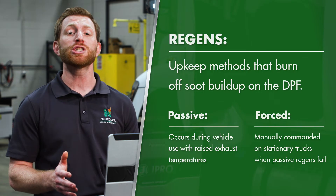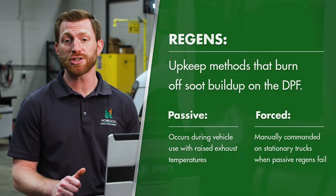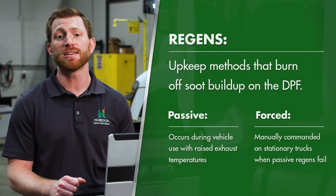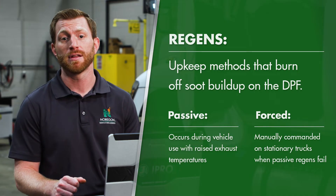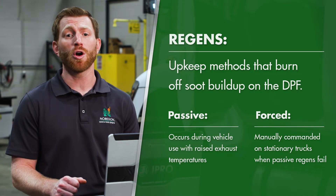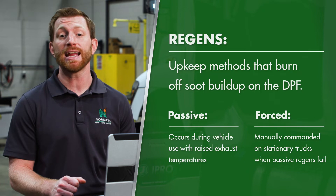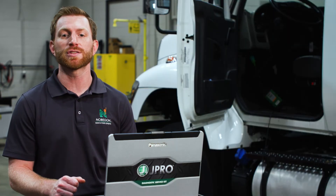A forced regen occurs on stationary trucks and is typically done when a passive regen is inhibited. This is common on short haul trucks when the engine does not maintain temperatures needed to burn off the soot. For example, a trash truck that makes frequent stops is less likely to undergo a passive regen than a long haul truck.